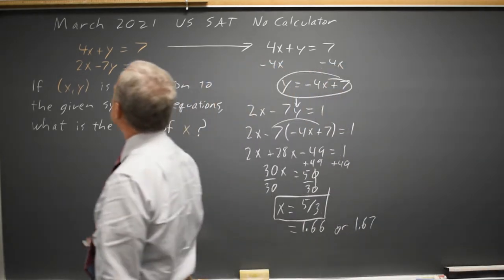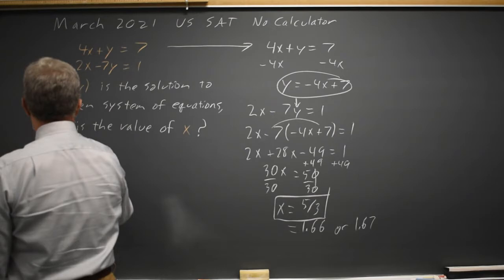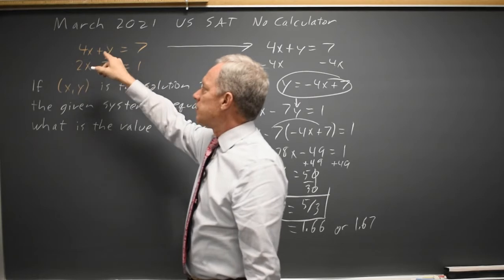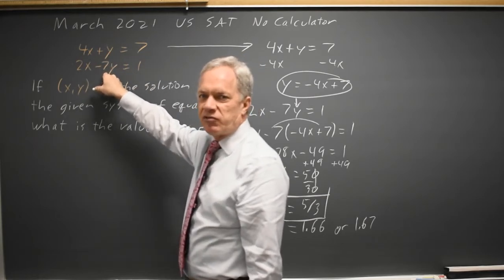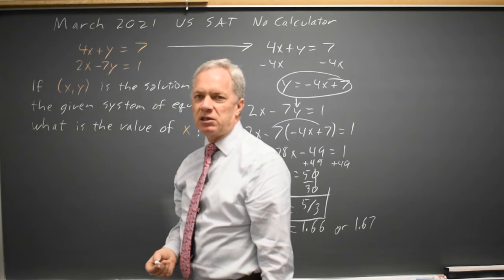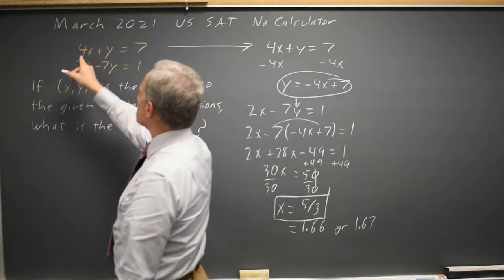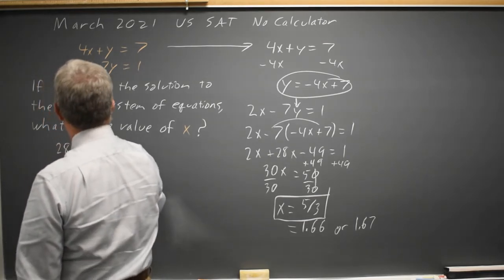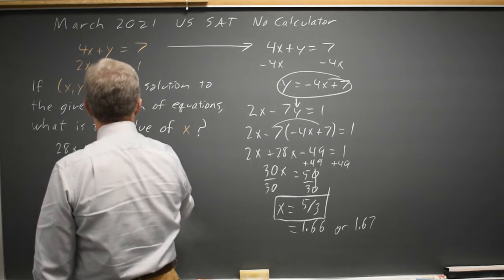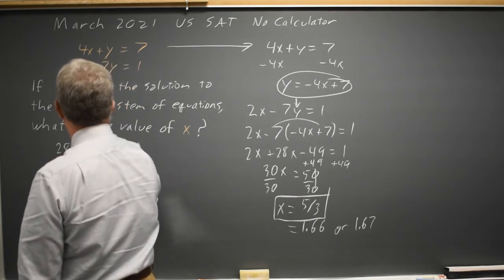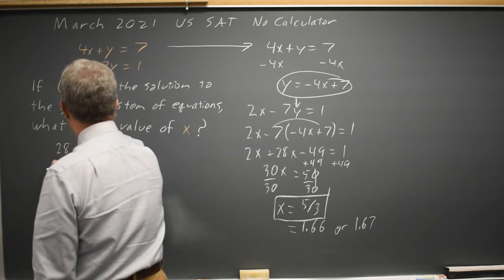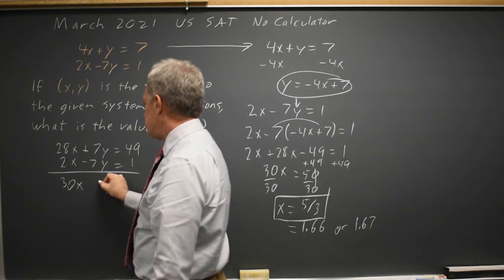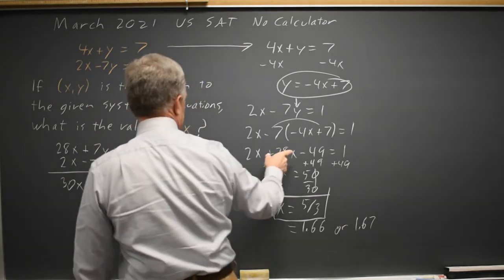Alternatively, we can solve by linear combination. If I take 7 times the first row and add that to the second row, I'll have 7y plus negative 7y giving me 0y. This is the same arithmetic but a different way of looking at it — adding a multiple of one equation to the other. So 7 times the first equation is 28x plus 7y equals 49, and I'm adding that to 2x minus 7y equals 1. When I add: 28x plus 2x is 30x, 7y minus 7y is 0y, and 49 plus 1 is 50. That takes me to the same place.